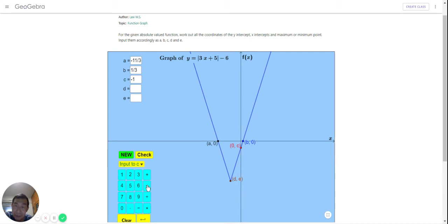So input d should be negative 5 divided by 3. Then lastly, what is the lowest value? The lowest value happens when this is not positive and this is 0. So, negative 6. So the lowest point, the y value has to be negative 6.